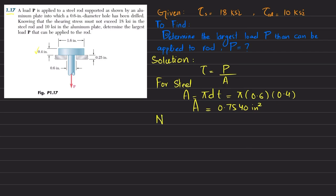Now we know that shearing stress in steel is equal to shearing force per unit shearing area. We need P, so P will be equal to shearing stress in steel times shearing area. P will be equal to 18 ksi multiplied by area 0.7540, which equals 13.57 kips. So this is for steel.